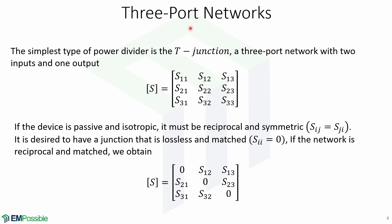Now let's look at three-port networks. The simplest type of power divider is the T-junction, a three-port network with two inputs and one output. Here is the scattering matrix of an arbitrary three-port network. It has nine independent elements. If the device is passive and isotropic, it must be reciprocal and symmetric, which means that Sij equals Sji.